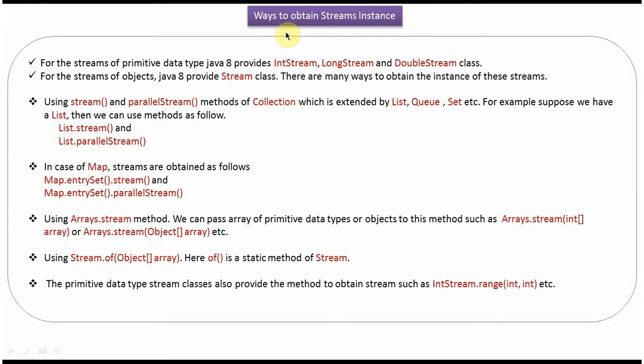In this video tutorial, I will cover what are the different ways we can use to obtain the stream instance. To create a stream of primitive data types, we can use IntStream, LongStream, and DoubleStream classes. To create a stream of objects, we can use the Stream class.